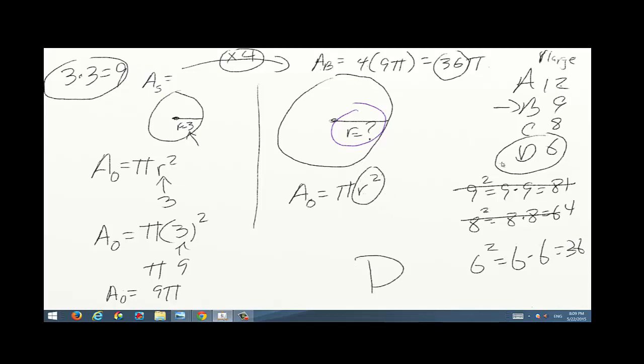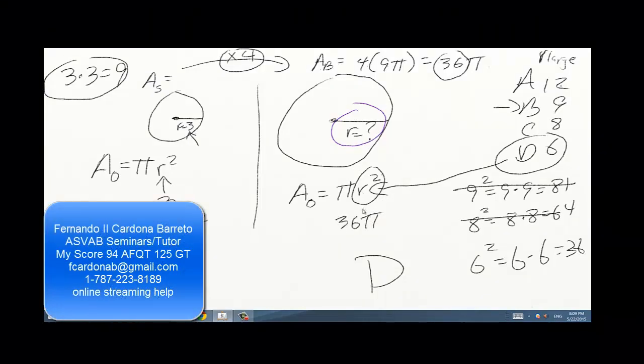Basically, if you substitute the 6 into this, you're going to get 36π, and that's basically what you want to get. So that's my answer for r. I hope the video helped you guys. My name is Fernando Cardona. I help people pass the ASVAB. I got a 94 AFQT and 125 GT. I've had various successful students. You can check my Facebook. My email is going to be written somewhere here, so you could send me an email. Thank you very much. Take care.